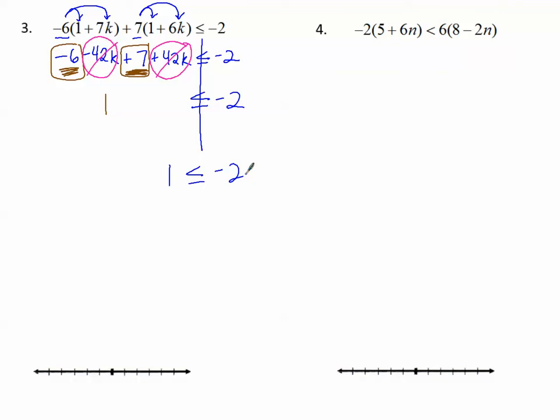So on the left side I have 1 less than or equal to negative 2. Well, I have no variable left. I just have numbers. Let's think about this. 1, is it less than negative 2? I know it's not equal. Well, if we put negative 2 on a number line. Negative 1, 0, 1, 2, 1, and negative 2. Here's 1 and here's negative 2. 1 is bigger than negative 2. It's greater than, not less than. This is not true.